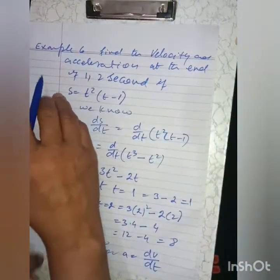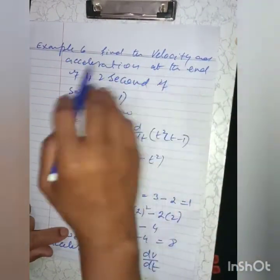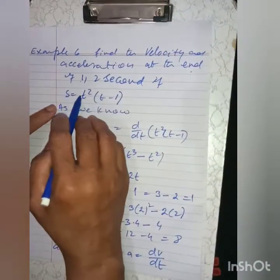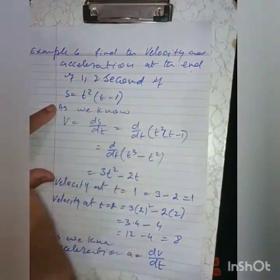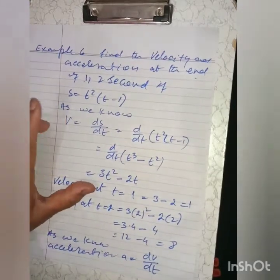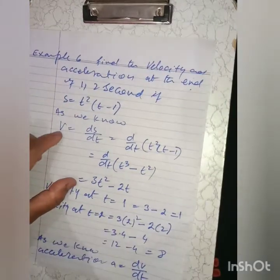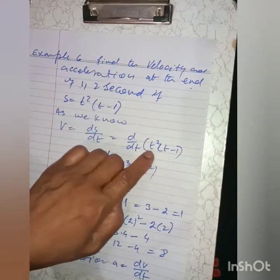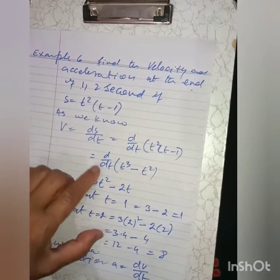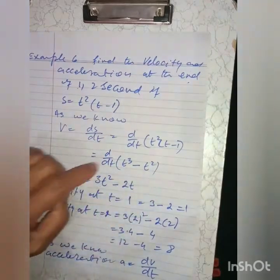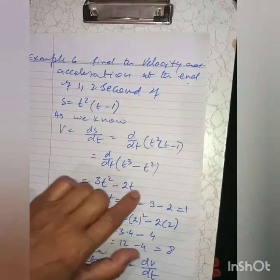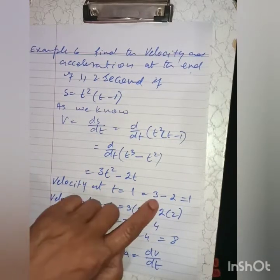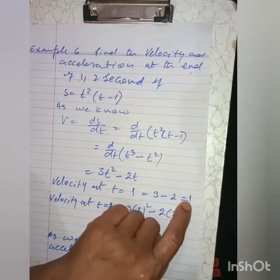Now find the velocity and acceleration at the end of 1 and 2 seconds if s = t²(t - 1). Since velocity is the derivative of displacement, v = ds/dt = d/dt of t²(t - 1) = d/dt of (t³ - t²) = 3t² - 2t. The velocity at t = 1 is 3(1)² - 2(1) = 3 - 2 = 1.